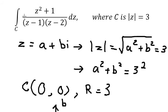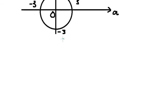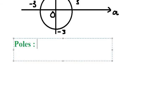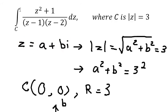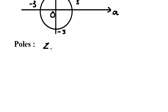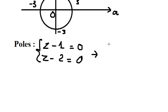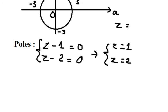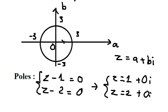Now we need to concentrate on finding the poles. So we set z minus 1 equals zero and z minus 2 equals zero. From the first, z equals 1, and from the second, z equals 2. Using z equals a plus bi, b equals zero for both, so these are real values. That means z equals 1 is here and z equals 2 is here on the real axis.